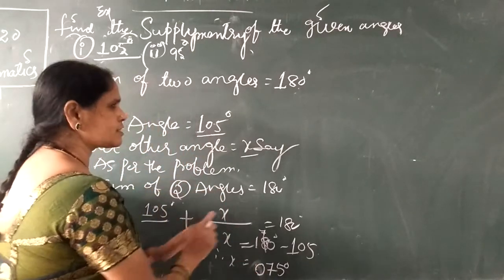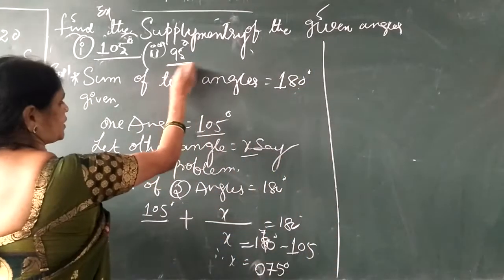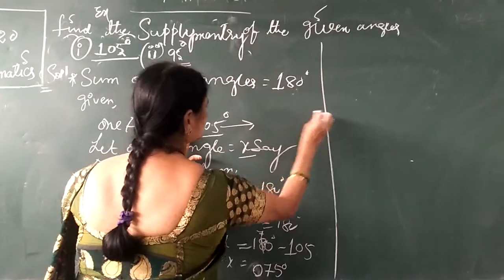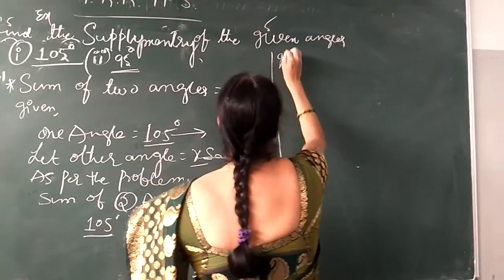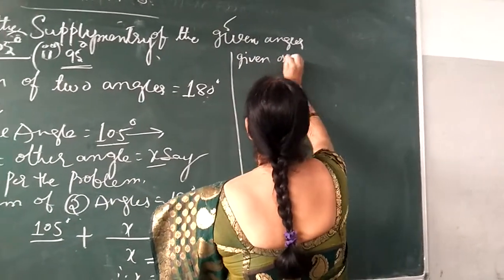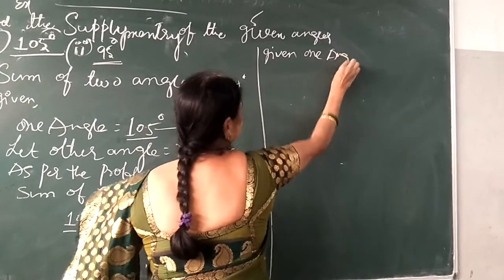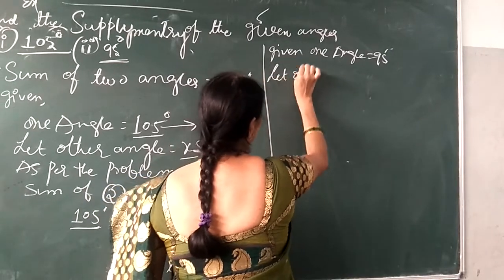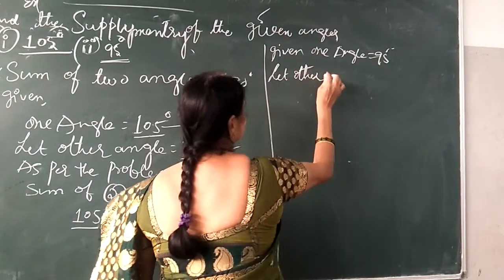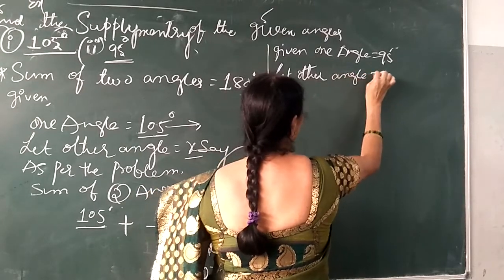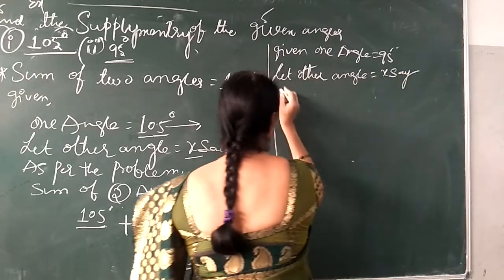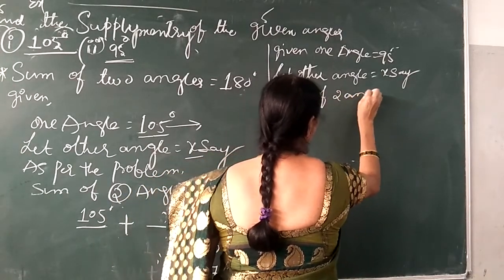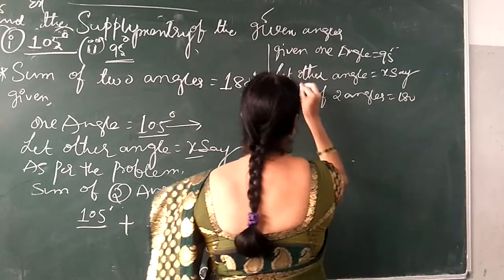In the same way, one more problem is there. What is the supplement of 95 degrees? It is the same approach. One angle is equal to 95 degrees. Let the other angle be equal to x. The sum of two angles is equal to 180 degrees.